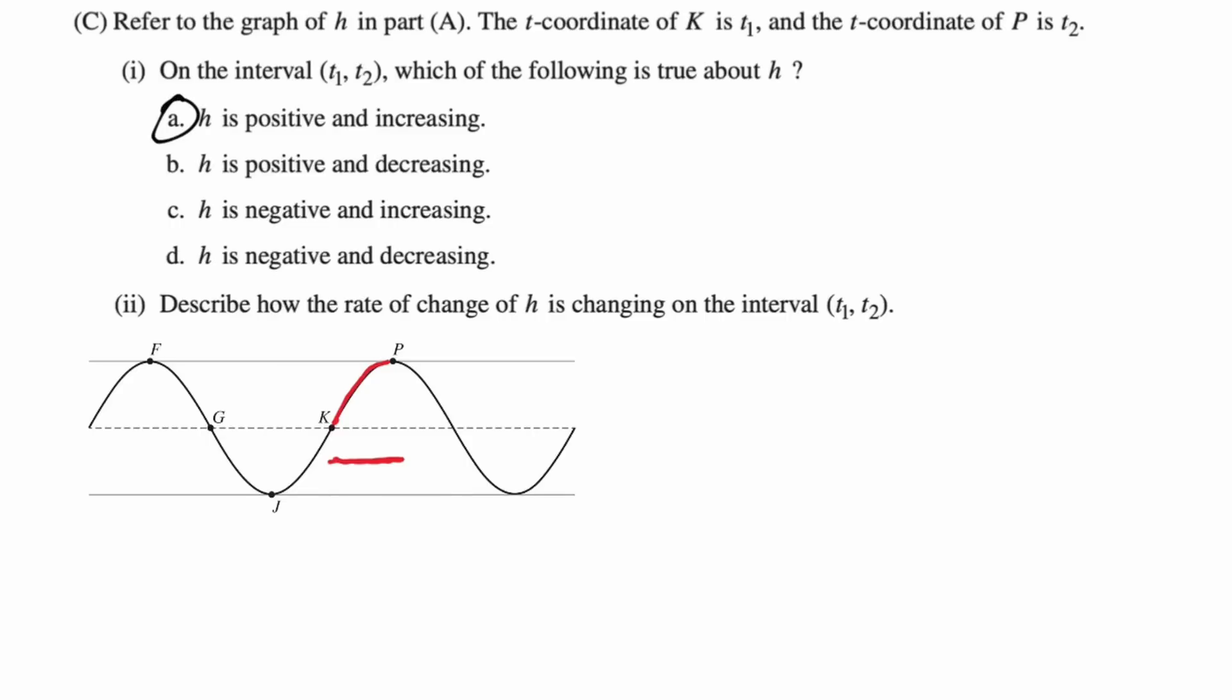For part two, it says describe how the rate of change of h is changing, how the rate of change of h. So the slope of h, how is the slope of h changing on the interval from t₁ to t₂? So on t₁ to t₂, that part that we've highlighted, the graph is concave down. So one of the things you want to definitely know going into this thing is concave up, concave down, what that means for the rate of change.